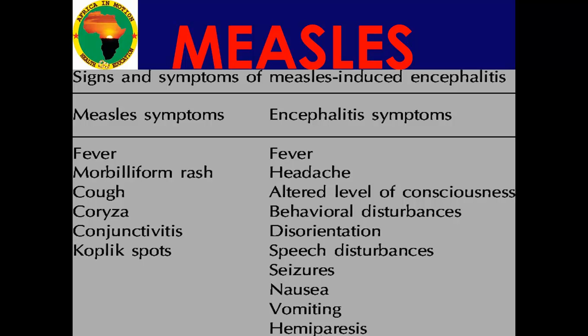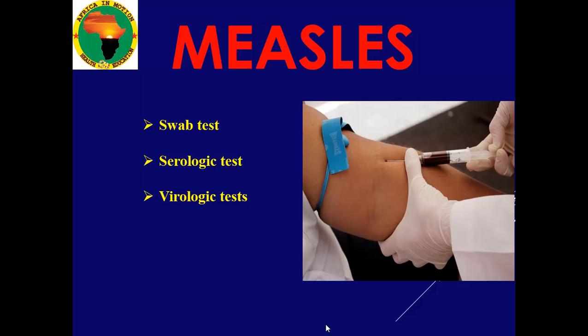Hemiparesis — paralysis of one side of the body — is a sign that the brain is suffering. It can also present as monoplegia affecting one limb, or involve the whole body, depending on which level and part of the brain has been affected.